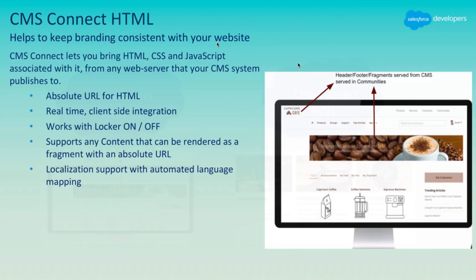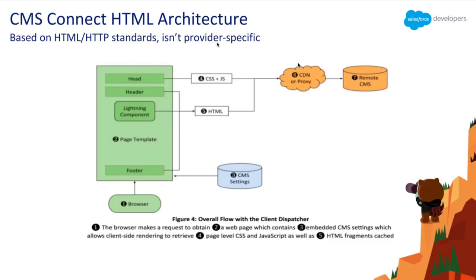CMS Connect HTML Connector helps to bring fully rendered HTML web content like headers, footers, and banners into communities. It's rendered via URL, with content having cross-origin resource sharing enabled, as a real-time client-side solution. The architecture is built on HTML and HTTP standards, so it's not a provider-specific connector. You provide public CMS server information in CMS settings, and during client-side rendering, an XHR call is made to get the content. We provide a way of injecting external JavaScript and stylesheets associated with the HTML into communities by parsing them through LockerService — a powerful security feature for Lightning components that helps prevent components from causing security issues.